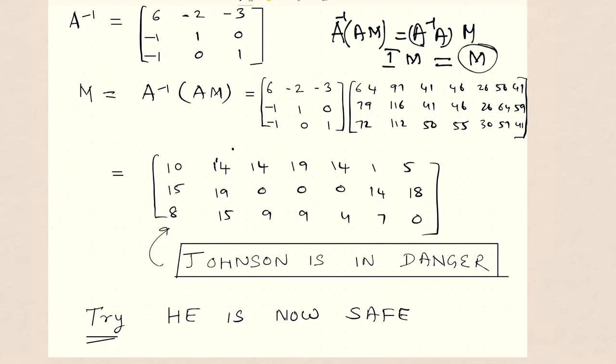So M is equal to A inverse into AM. Now when you use matrix multiplication, you get back the old matrix, and then you decode it. Johnson, he is in danger. Now you try this yourself as an exercise, how to decode this message. He is now safe.